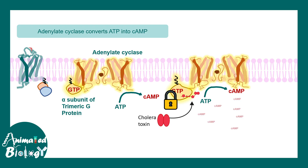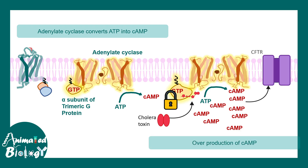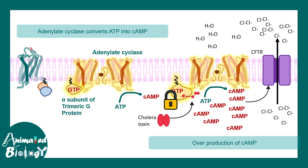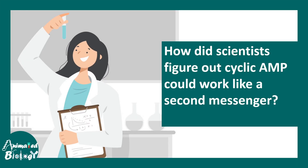As a result, lots and lots of cyclic AMP is generated. Cyclic AMP can activate the opening of a channel known as CFTR, which leads to a huge loss of chloride. Alongside chloride, water is also lost, resulting in diarrhea or rice water stool. So alteration in cyclic AMP levels in the cell can underlie the pathology of a disease.